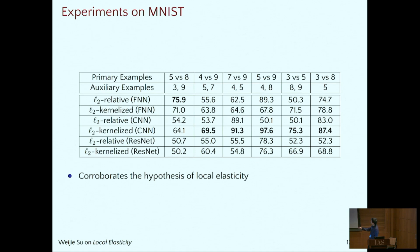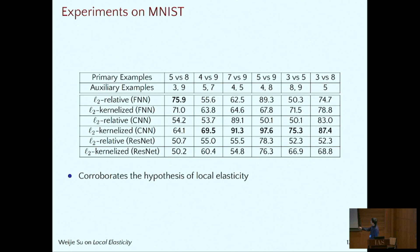This is the result on the MNIST. For example, if you want to distinguish between digit 4 and 9, and we use auxiliary examples which are 5 and 7, we can get this accuracy. And this, in turn, supports our hypothesis of local elasticity.